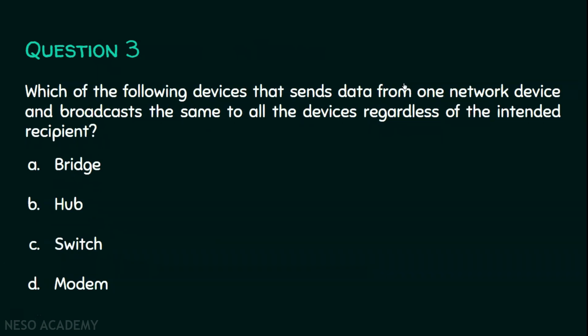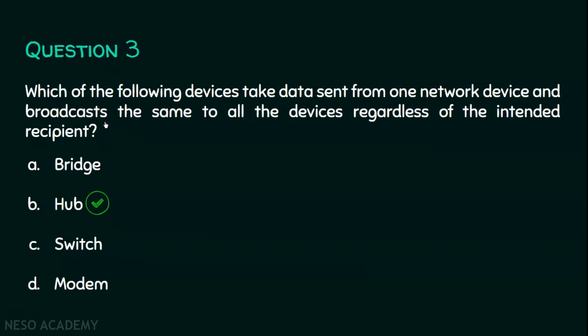Question number three: which of the following devices sends data from one network device and broadcasts the same to all devices regardless of the intended recipient? Option A: bridge. Option B: hub. Option C: switch. Option D: modem. The keyword here is broadcasting — when a sender sends the data, all devices receive it. Hub does broadcasting always, so the answer is option B, hub.